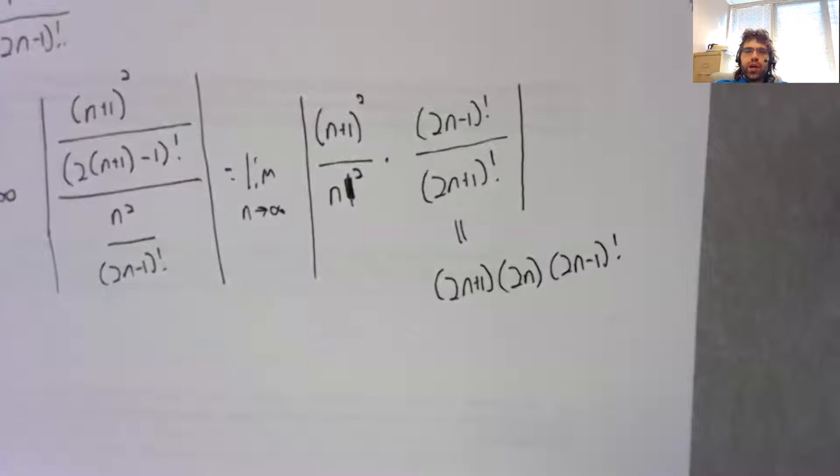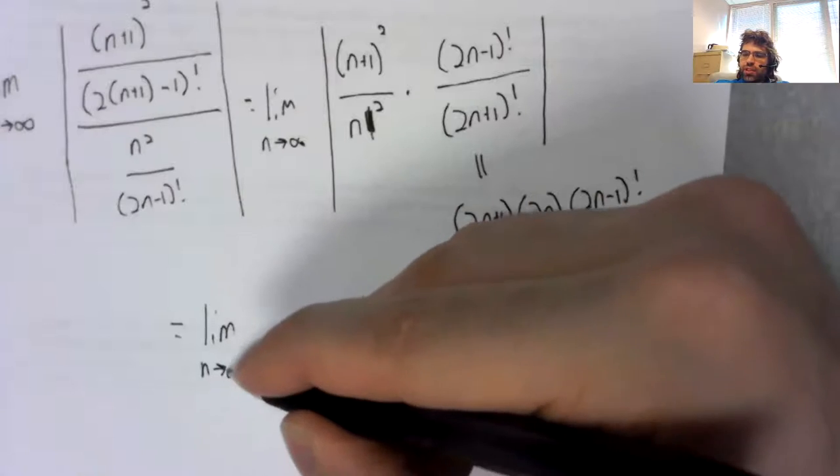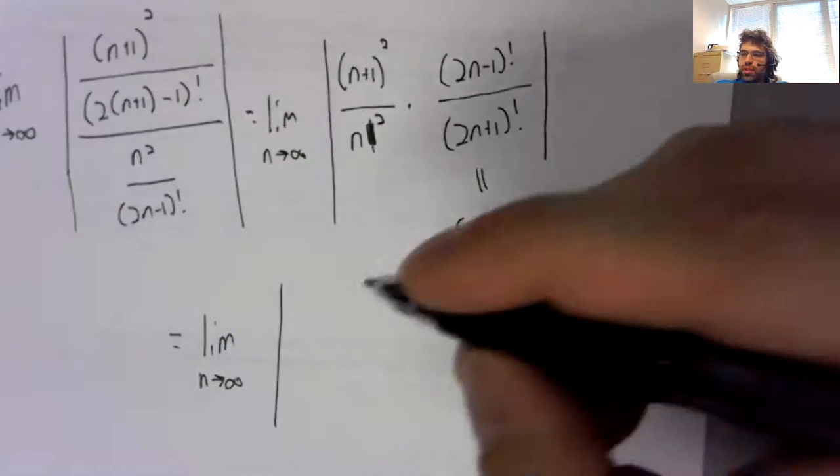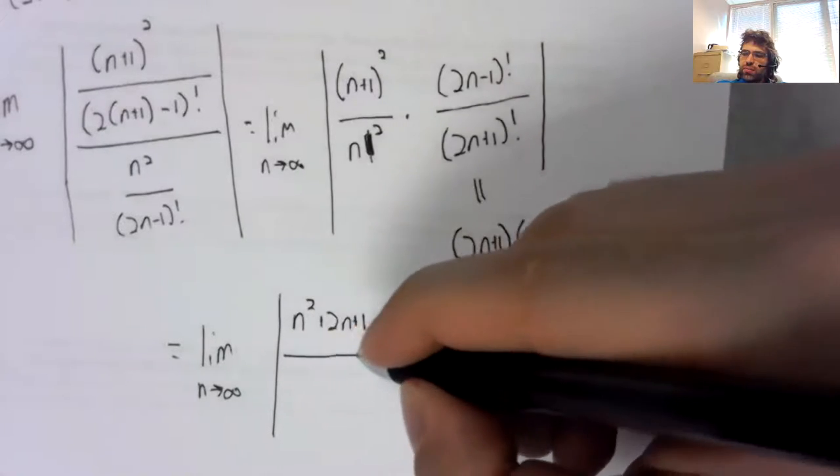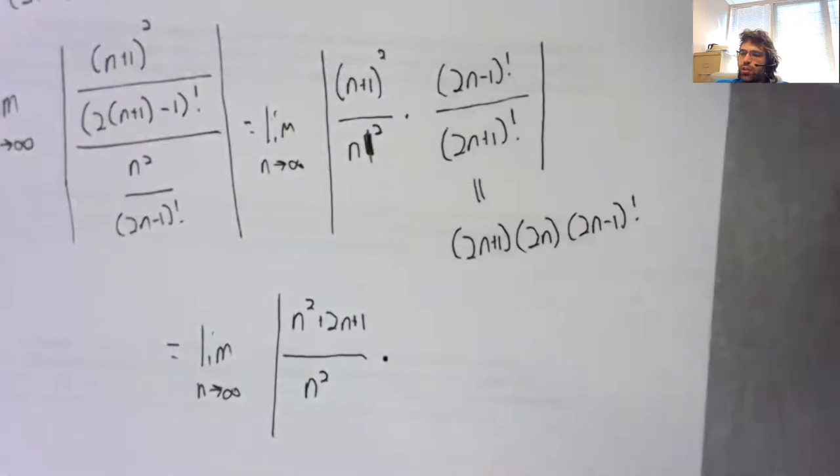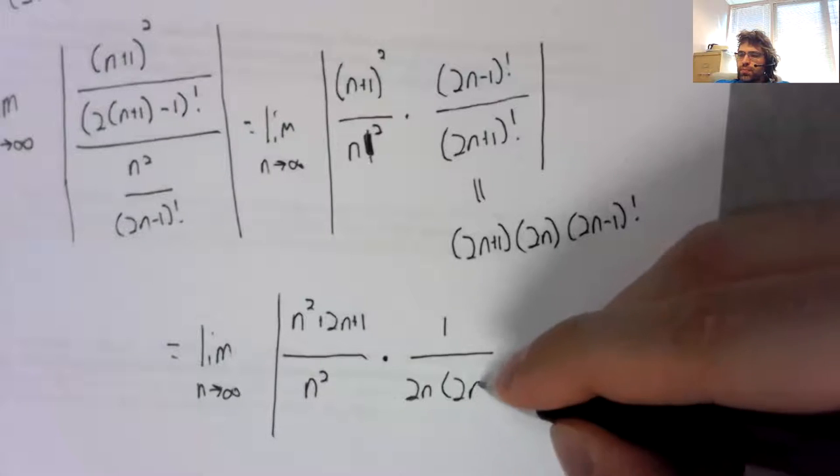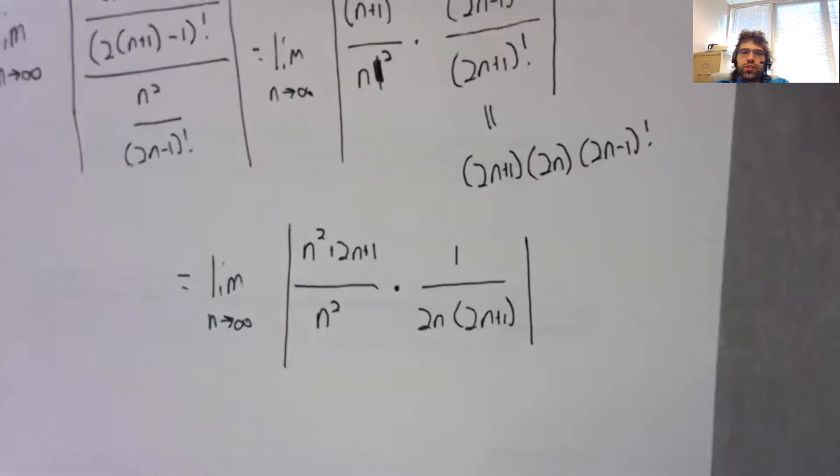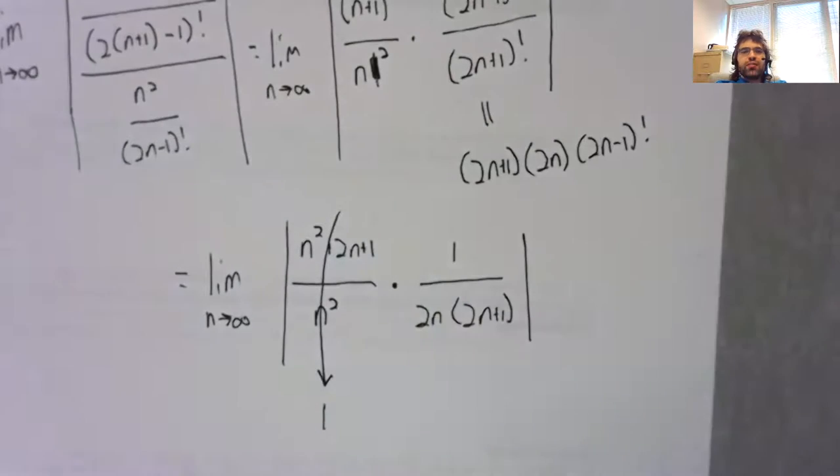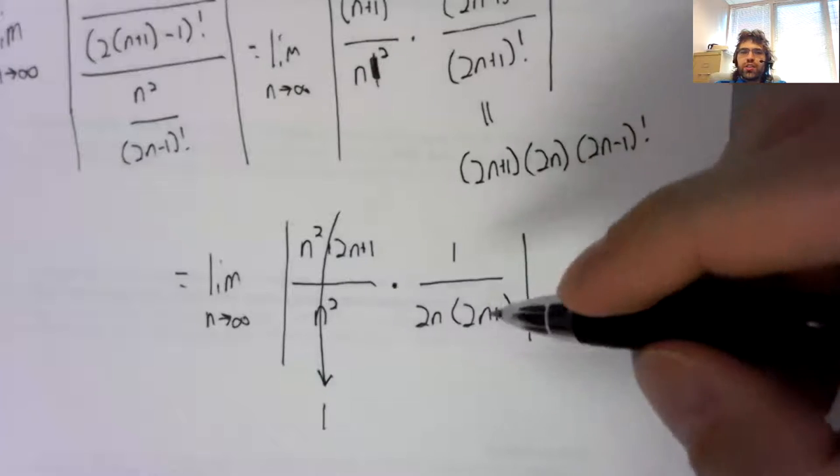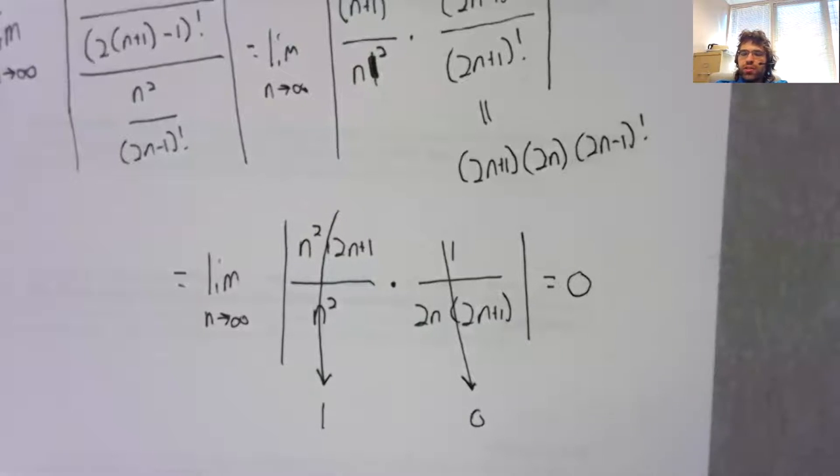So I'm going to divide it by a sub n. Not to make any simple simplification yet. But now I'll say that two n plus one factorial is two n plus one times two n times two n minus one factorial. So we get the limit as n goes to infinity of n squared plus two n plus one over n squared times one over two n times two n plus one. You can use L'Hopital's rule or other means to show that as n goes to infinity, this goes to one. This goes to zero. So the limit is zero.